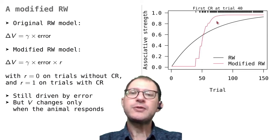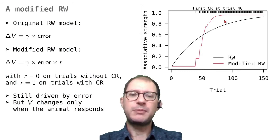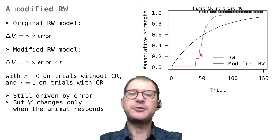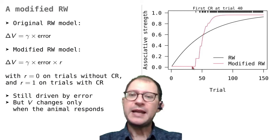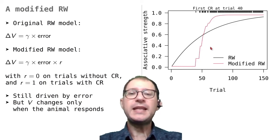The red line shows how the modified model solves the problem. In this model, the associative strength only changes when there is a response. With this idea, it makes more sense that the rabbit can learn quickly after trial 40, but to not respond at all before that, because the trials without a response would not increase associative strength. We can see that in the red line, because the red line is flat here, it's flat here, it's flat any time there is a trial without a response. That means on those trials the response probability is not increasing.